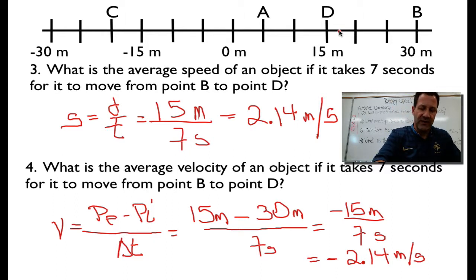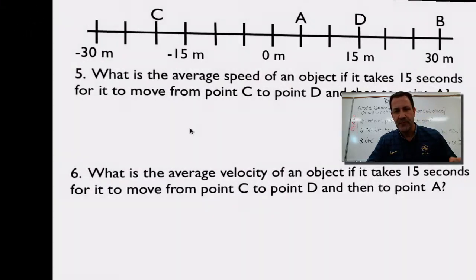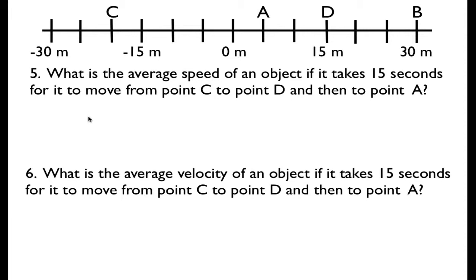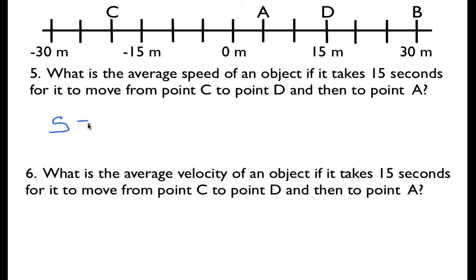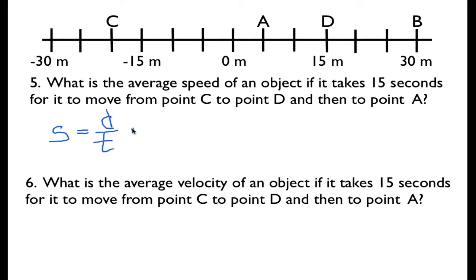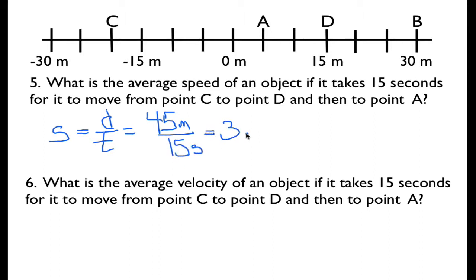Let's do one more set. The first question asks for speed. Speed is distance divided by time. The object went from C to D and then to point A — counting 5, 10, 15, 20, 25, 30, 35 — and the total is 45 meters. The time is 15 seconds, so the answer is 3 meters per second. That's the speed.